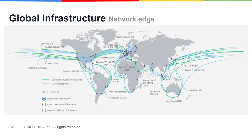The network edge is generally defined as the place where a device or local area network connects to the internet. It is called the edge because this is the entry point to the network where devices themselves are communicating with the internet. Google Cloud offers connections to Google Cloud services from over 100 locations. Edge networking provides the lowest latency possible and saves bandwidth. These sites are sometimes referred to as points of presence, or POPs.